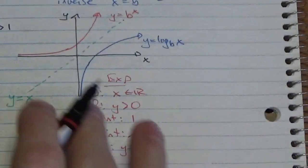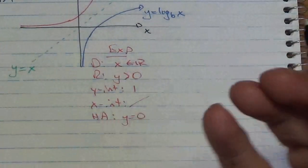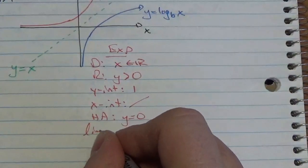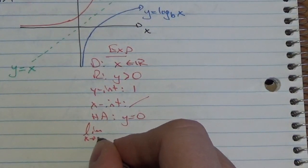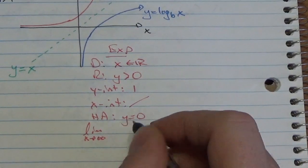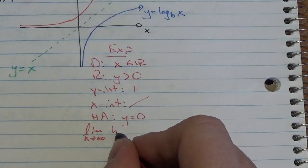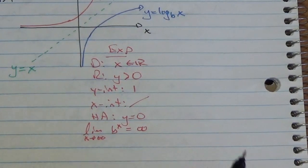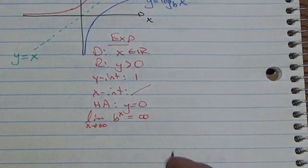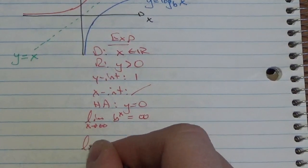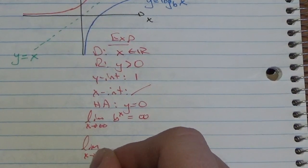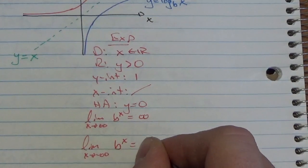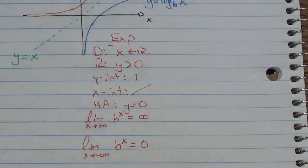Since this is a calculus class: the limit as x goes to infinity of b to the x is infinity, and on the other hand, the limit as x approaches negative infinity of b to the x is going to go to 0.